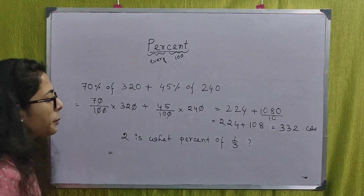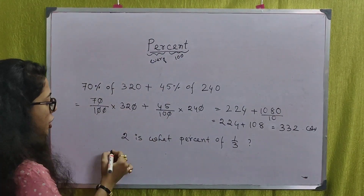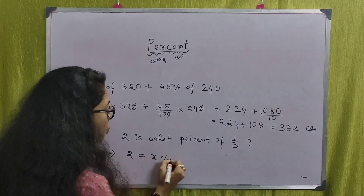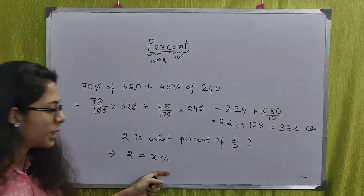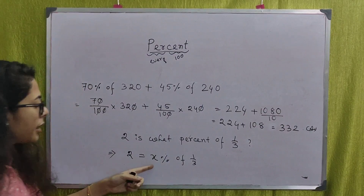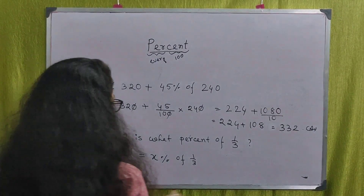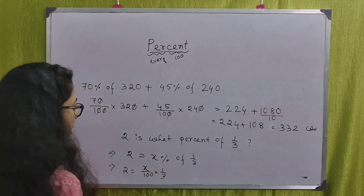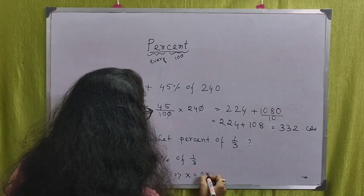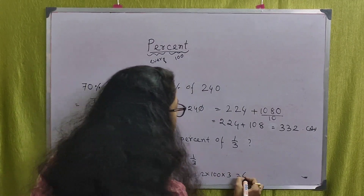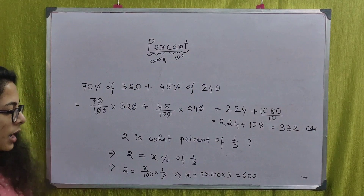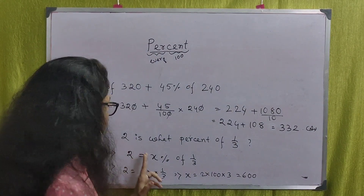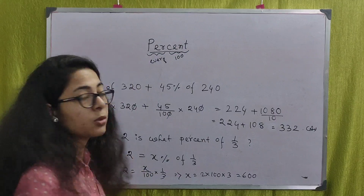Next problem: 2 is what percent of 1 by 3? So what do we do? First, we set up x by 100 into 1 by 3 equals 2. We solve: x equals 2 into 100 into 3, which gives us 600. So x equals 600. Therefore, 600% of 1 third is equal to 2.